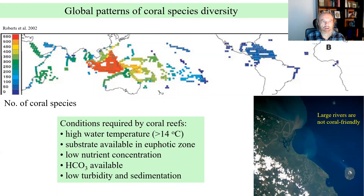However, unlike rainforests, which are the dominant ecosystem in the tropical region, coral reefs are actually very limited in their spatial occurrence, because for a coral reef to develop, a number of restrictive conditions must be satisfied. Coral reefs like high water temperature, above 14 degrees centigrade, so they are tropical.